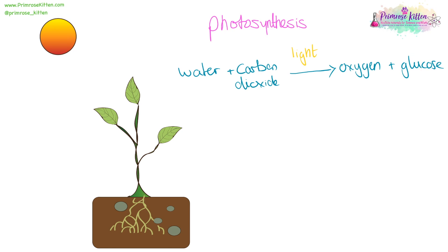You also need to know the symbols for these. Water is H₂O plus carbon dioxide, which is CO₂, goes to oxygen O₂ plus glucose, which is C₆H₁₂O₆. This needs to be balanced, but it's a nice easy one to balance because it is 6-6-6. So you can just remember that it's 666.